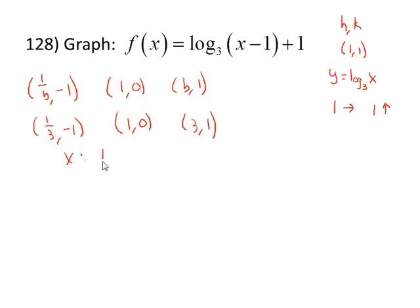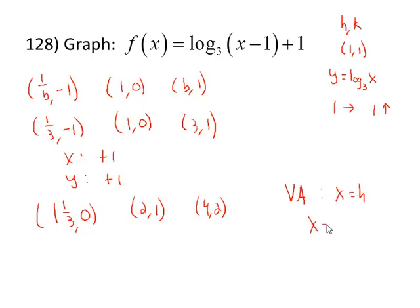For the x values we'll add 1 to those, for the y values we'll add 1 to those. So our points are (1⅓, 0), (2, 1), and (4, 2). Keep in mind that a logarithmic function has a vertical asymptote at x equals h, so for us that's going to be x equals 1. The domain is restricted to the open interval (1, infinity). The range of a logarithmic function is negative infinity to positive infinity.